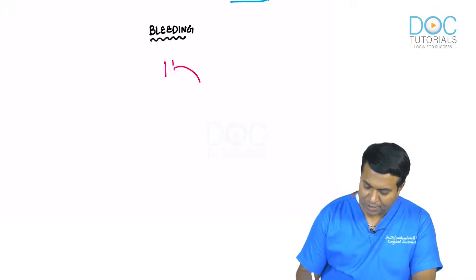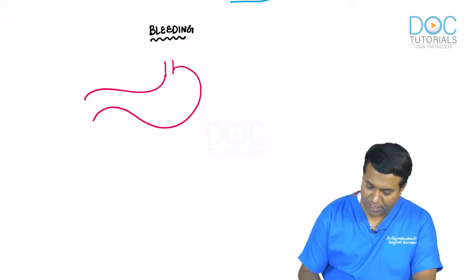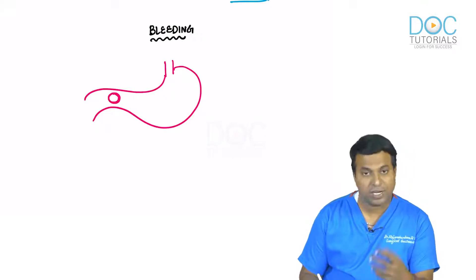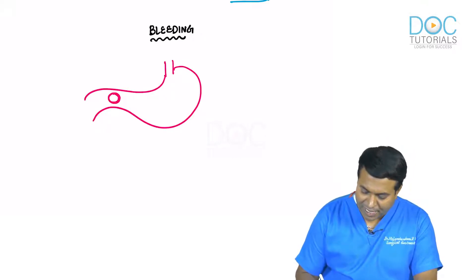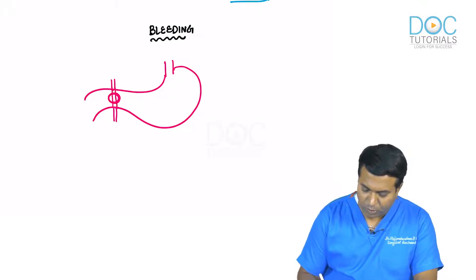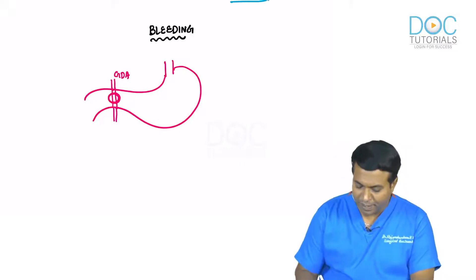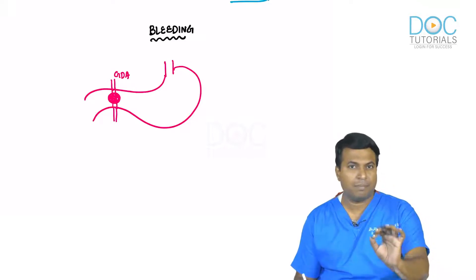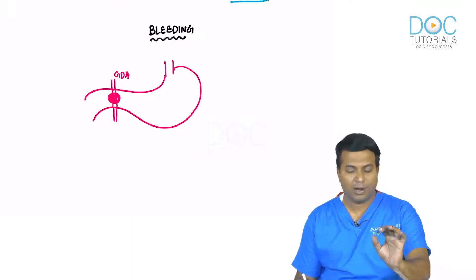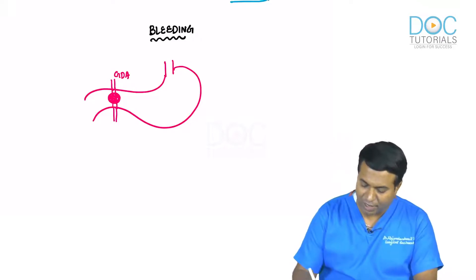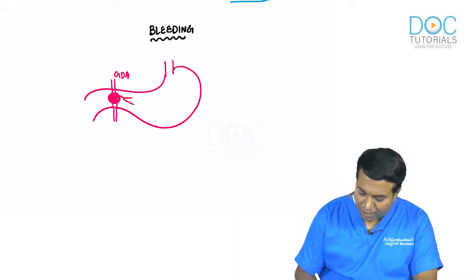Bleeding in a duodenal ulcer is usually seen from a posteriorly located ulcer — an ulcer sitting exactly on the gastroduodenal artery. If the ulcer is active enough, it can penetrate the gastroduodenal artery and bleed into the duodenum.